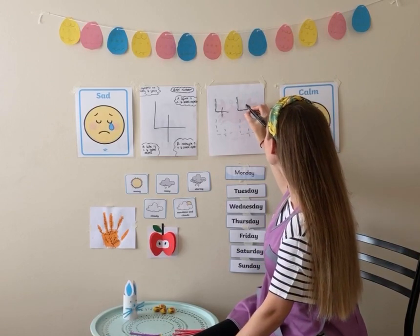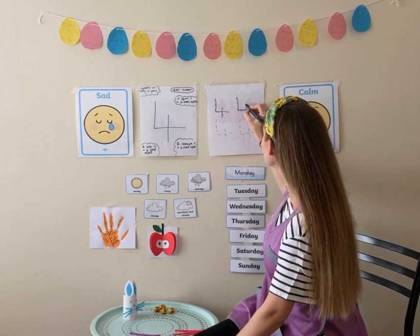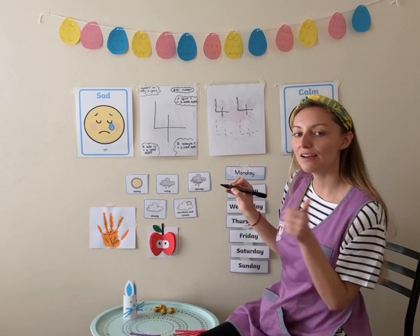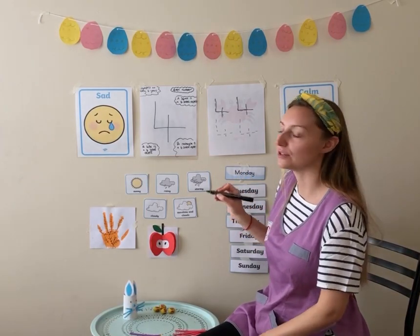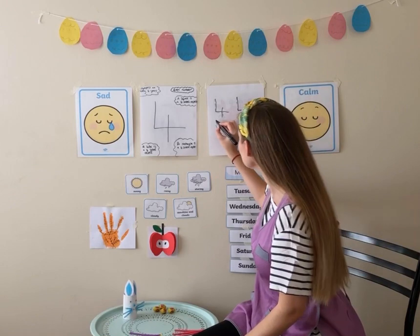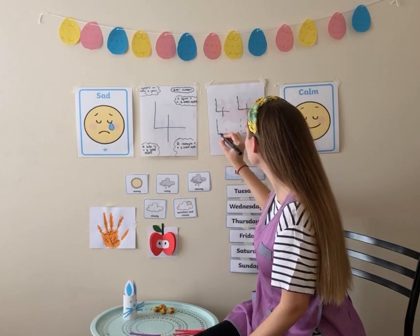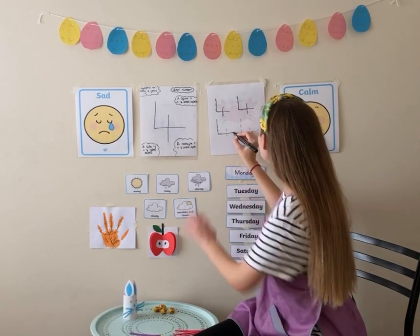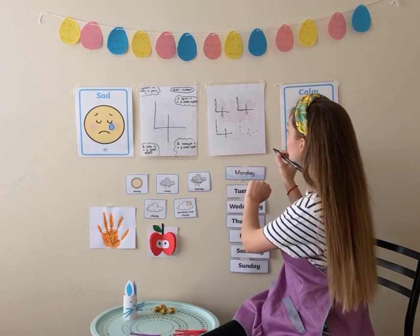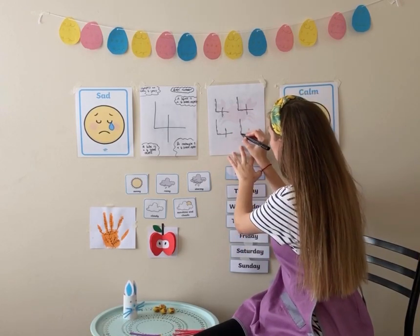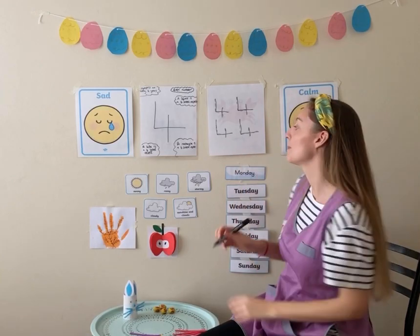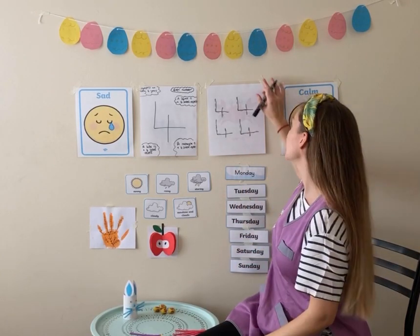Let's practice writing it together. Straight down, across and then we leave the page and then go straight down the middle. So, straight down, across, leave the page and go down the middle. Very good. I'm sure you're doing a great job. Let's do two more. Straight down, across and then straight down the middle.